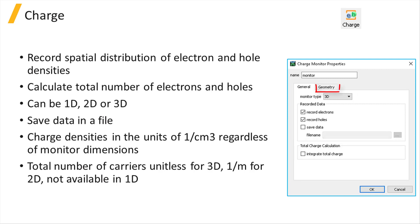Total charge calculation can also be disabled or enabled. The monitor's location and size can be adjusted under its geometry tab. The charge density distributions returned by the monitor will always have the unit of per cubic centimeter, regardless of whether the monitor is 1D, 2D, or 3D. The total number of electrons and holes is a unitless number for a 3D monitor and in a unit of per meter for a 2D monitor. The total charge result is not available for a 1D monitor.